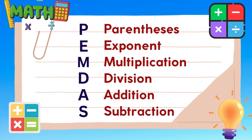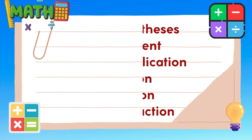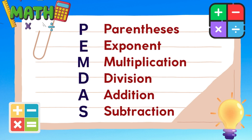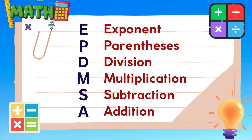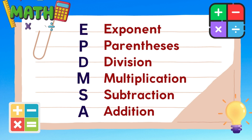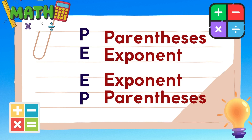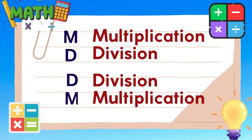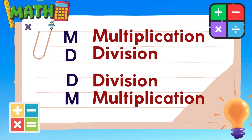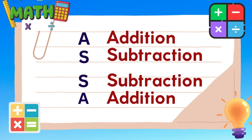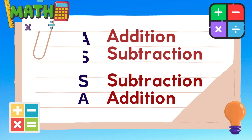This rule states that we need to perform the operations first inside the parenthesis, and then simplify the number raised to a given exponent. Next, we need to perform all those involving the operations of division and multiplication. The last operation to perform is either addition or subtraction, whichever comes first from left to right. Remember that all of this should be done from left to right, whichever comes first.